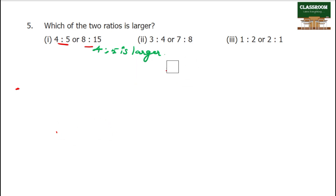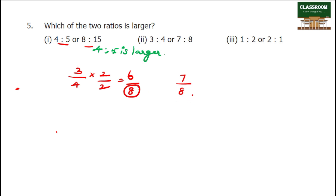From previous class: multiply to get common denominator, then compare. For 3 by 4 and 7 by 8: common denominator is 8. 3 by 4 becomes 6 by 8. Comparing 6 by 8 and 7 by 8 — 7 by 8 is larger. So 7 is to 8 is the largest ratio.